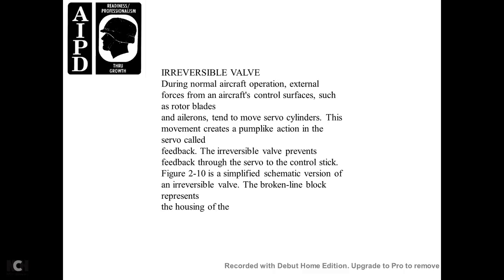Bypass Valve. A bypass valve is provided to minimize resistance to servo-piston movement when it must be moved manually. The valve opens automatically when there is no operating pressure on the servo, allowing fluid to flow freely between the chambers on each side of the piston. Irreversible Valve. During normal aircraft operation, external forces on aircraft control surfaces, rotor blades, or air loads tend to move servo cylinders. This movement creates a pump-like action called feedback. The irreversible valve prevents this feedback from reaching the control stick.